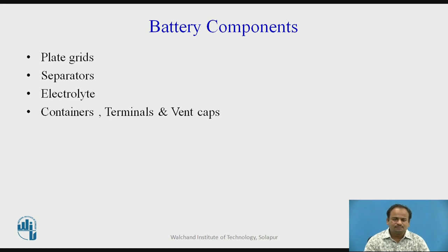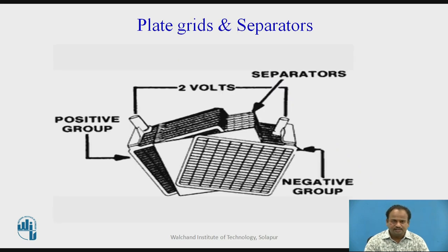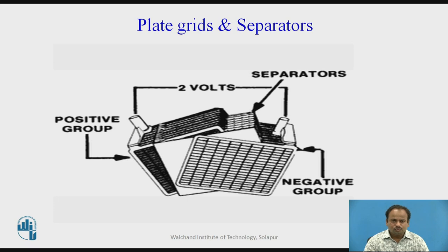Different battery components are there: plate grids, separators, electrolyte, containers, terminals, and vent caps. The positive group and negative group are shown, and two holes shown are the terminals. In between there are the separators. The positive group is formed with lead oxide, also called lead peroxide, and the negative group is formed with the material spongy lead. The separators are required to fit in between to avoid a short circuit between the positive group and the negative group. In this way, battery grids and separators are fitted in the battery.